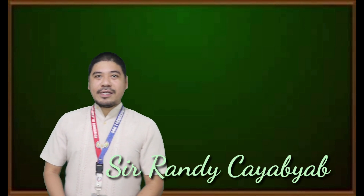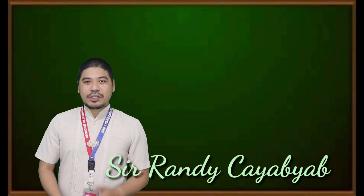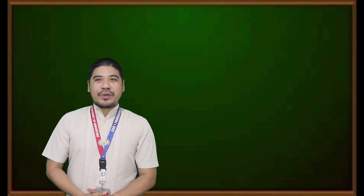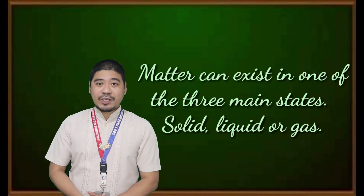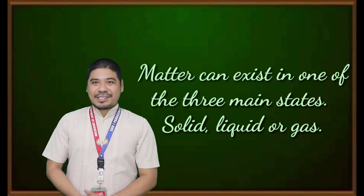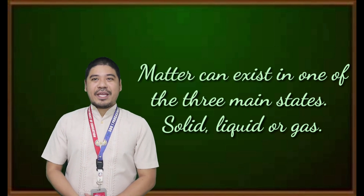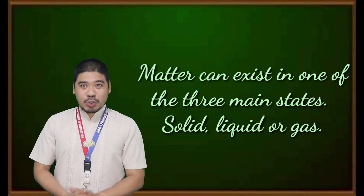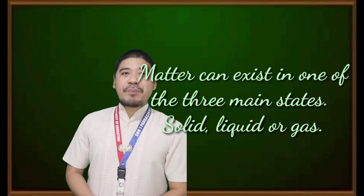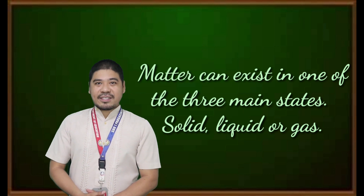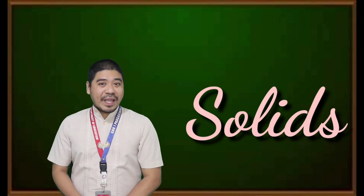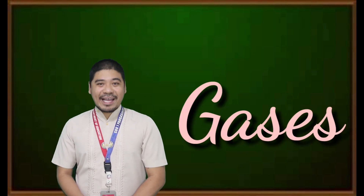Before we start our new lesson, let us try to answer the following questions to check whether you understood the previous lesson. Matter can exist in one of three main states: solid, liquid, or gas. Let us try to describe the common properties of the three states of matter. Just answer solids, liquids, or gas.